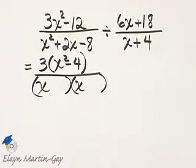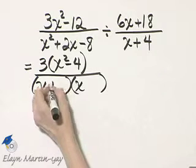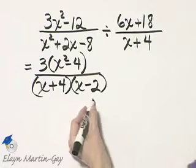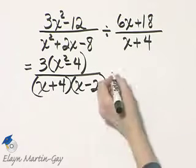X times x. I'll let you check, but I believe it's going to be plus 4 minus 2, and that's the factorization of the first denominator.